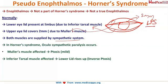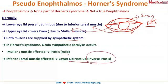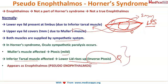If the inferior tarsal muscle — whose function is to keep the lower lid down — is paralyzed, the lower lid rises up. This condition is called inverse ptosis, or reverse ptosis, and it is seen in Horner's syndrome. This mild upper ptosis combined with inverse ptosis of the lower lid gives the impression of enophthalmos, so it is called pseudo-enophthalmos.